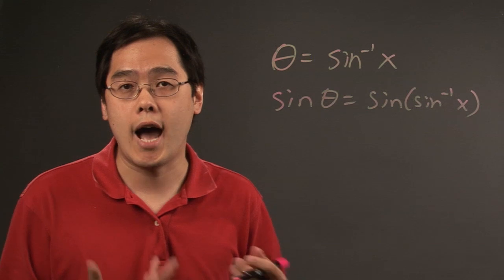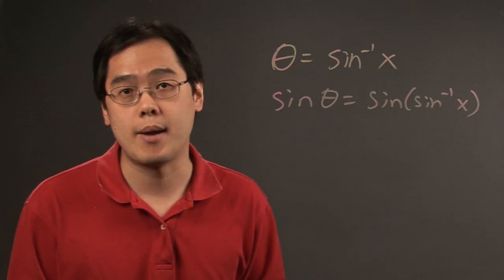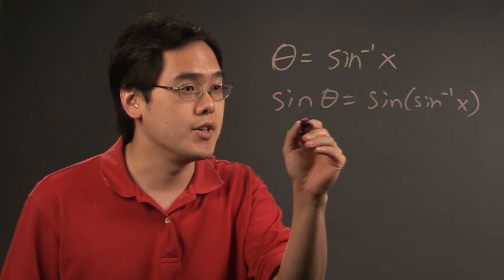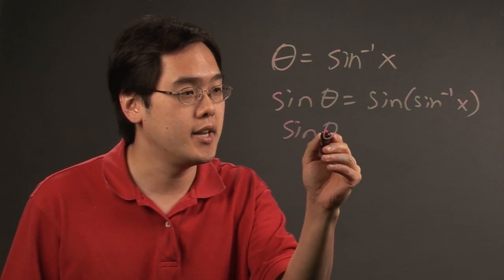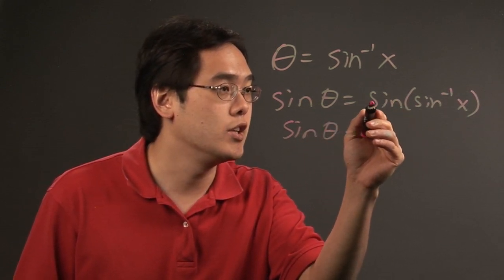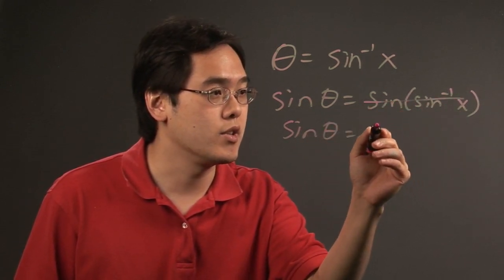Now, sine and inverse sine are opposite operations or inverse operations of each other. So the idea here is you're going to keep the sine of theta, but sine and sine inverse literally cancel each other out and you're left with x.